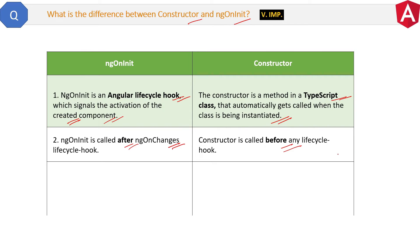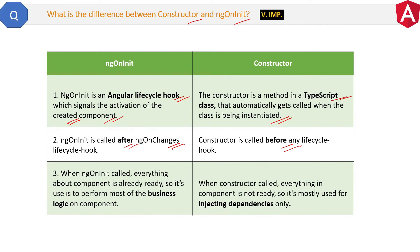The second difference is that ngOnInit is called after the ngOnChanges lifecycle hook, whereas the constructor is called before any lifecycle hook — even before ngOnChanges. So when the constructor is called, the component is not yet created or ready. The most important difference is when to use ngOnInit versus when to use the constructor. When ngOnInit is called, everything about the component is already ready. So developers use it to perform most of the business logic on the component. If you perform business logic before ngOnInit, many times the application can break because the component is still not ready.